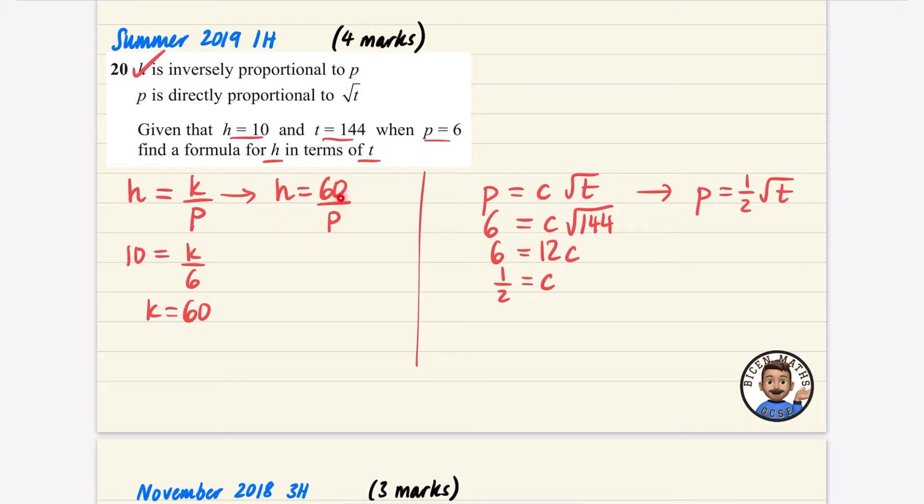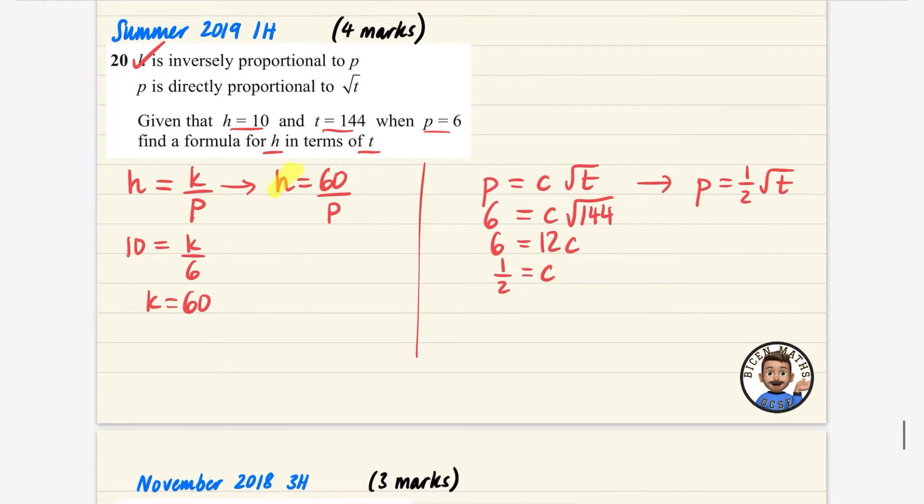Now, they want us to get a formula for H in terms of T, which means I need to somehow combine together this formula with this formula that we have. Now, I can do that because I have got what P is equal to. So I can take this formula that I have of this one here. I'm going to move it up here.